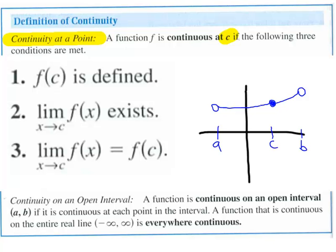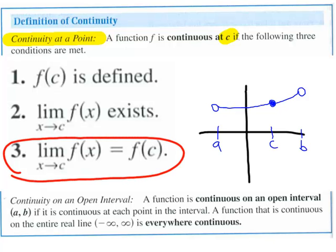I've had students in the past point out, can't you really just focus on that third condition? Because if that's true, you're clearly implying that F of C is defined and that the limit is also defined. And I would tend to agree with that. Typically in calculus books, you're going to see it as this three point statement here, these three conditions. But really it's that third condition does imply the other two. So I would agree that's the one that really counts.